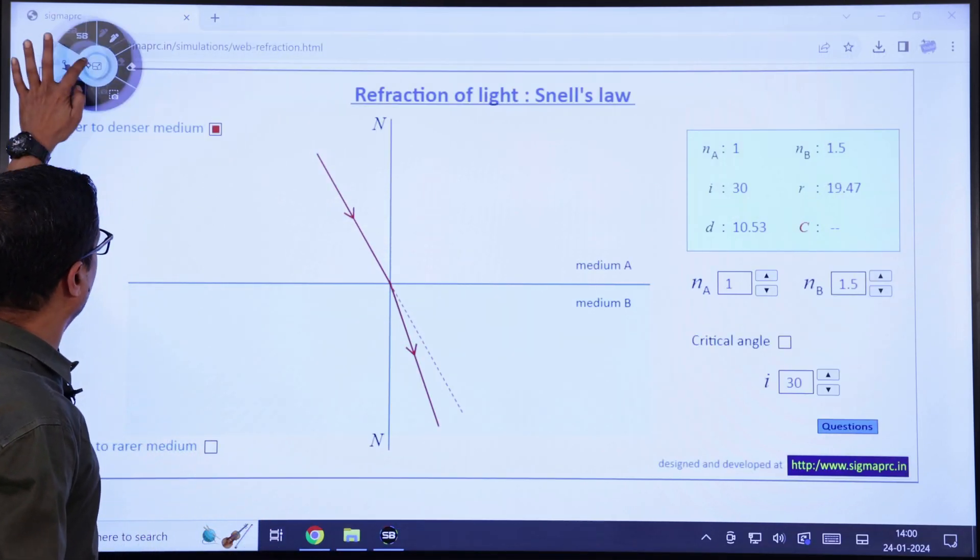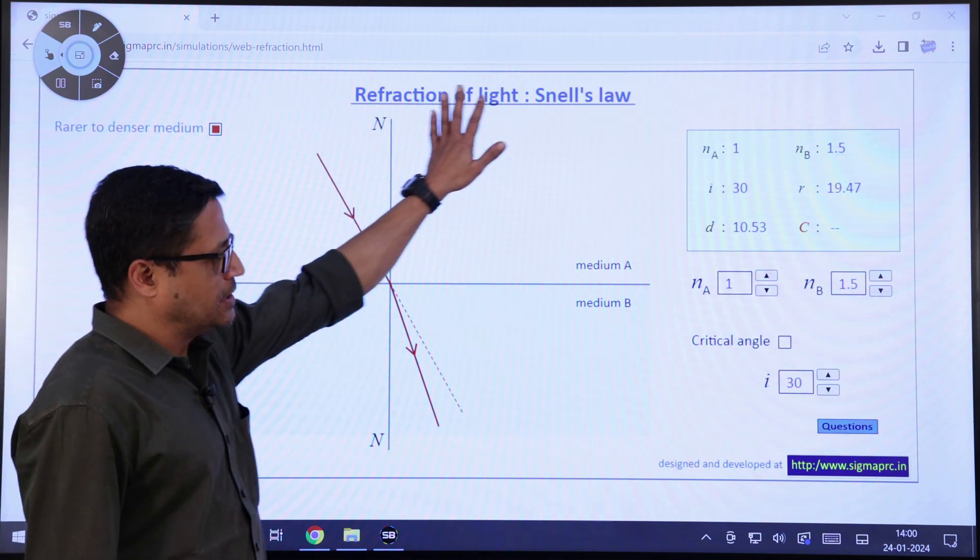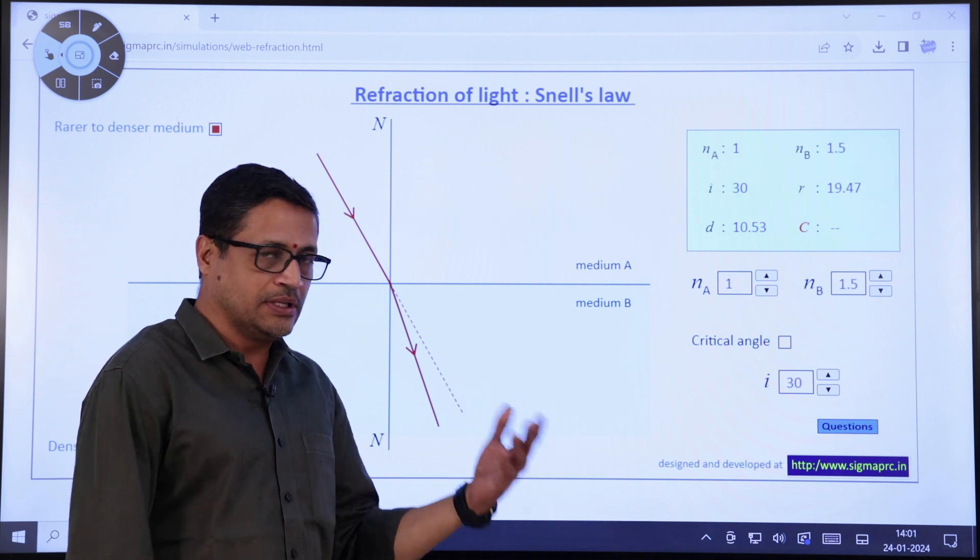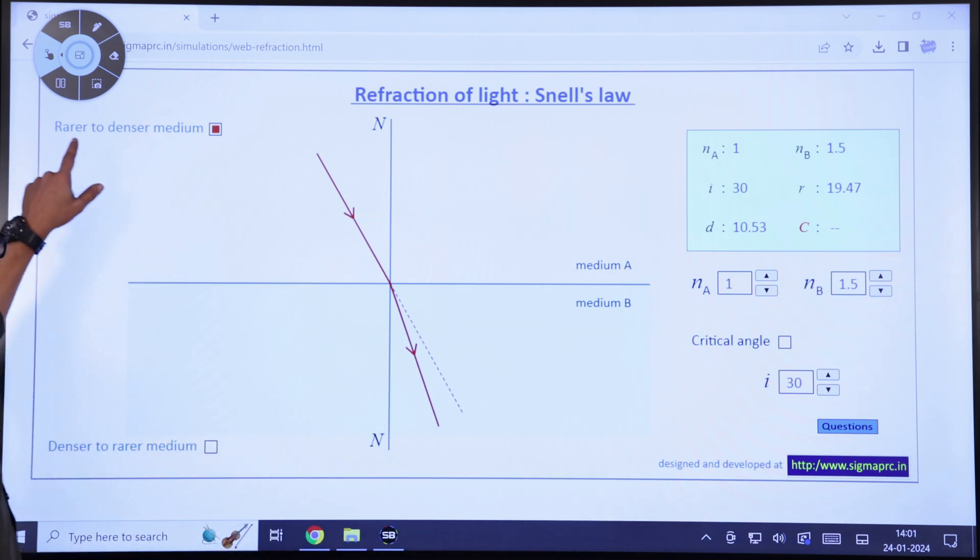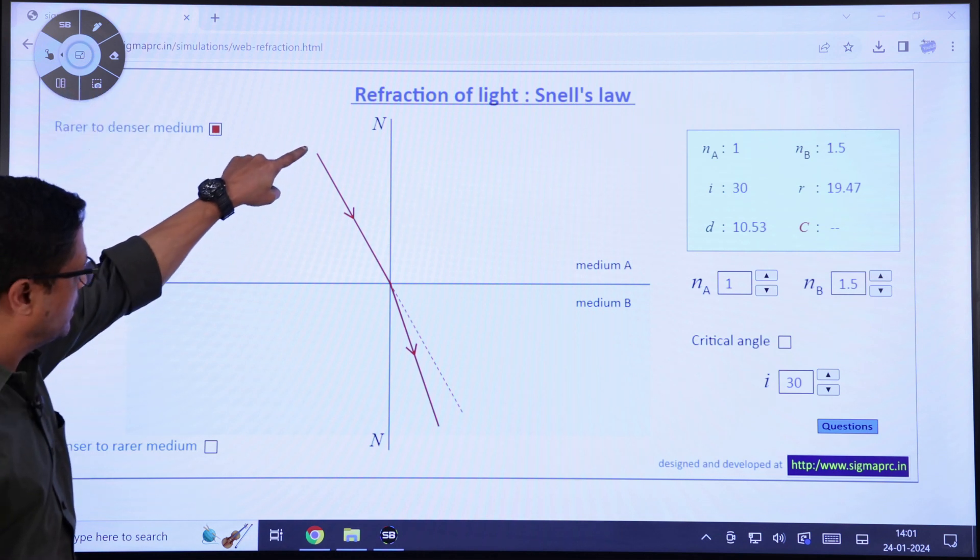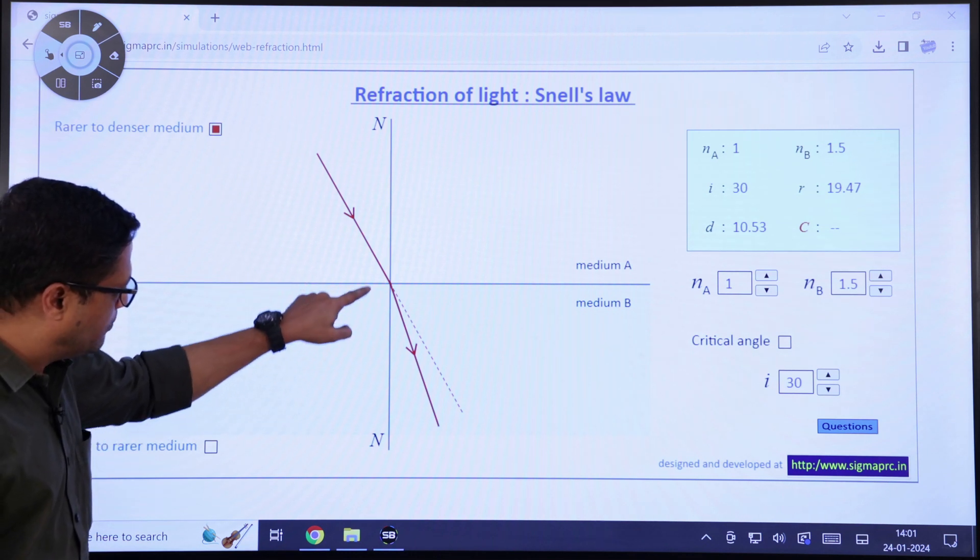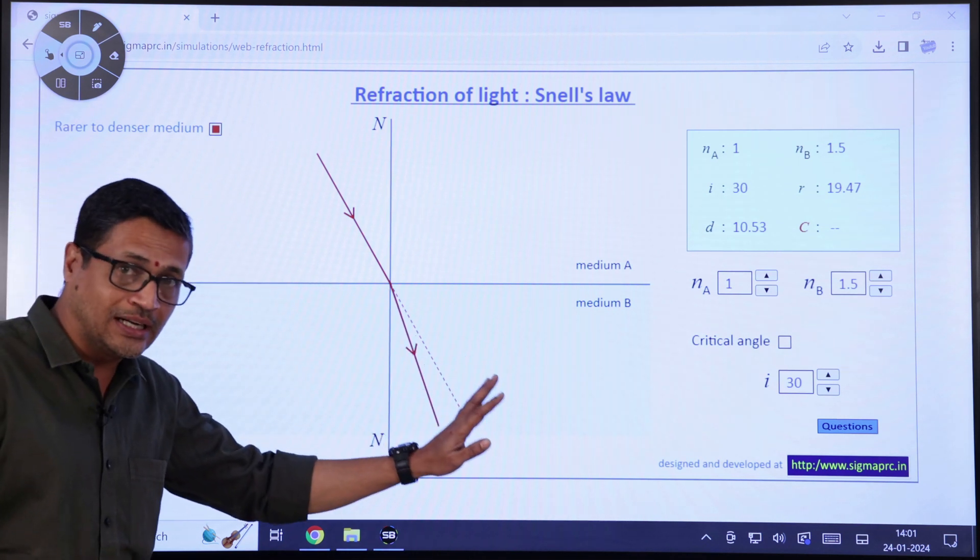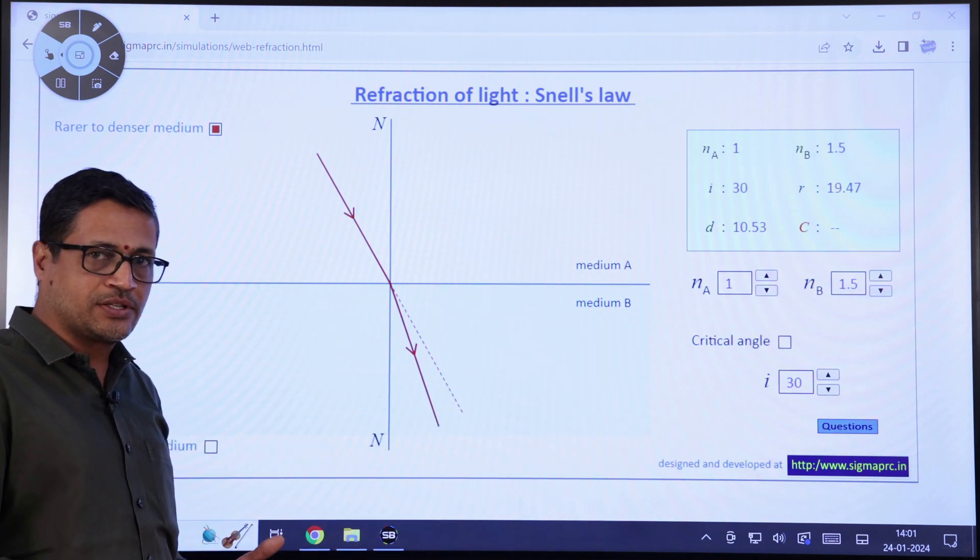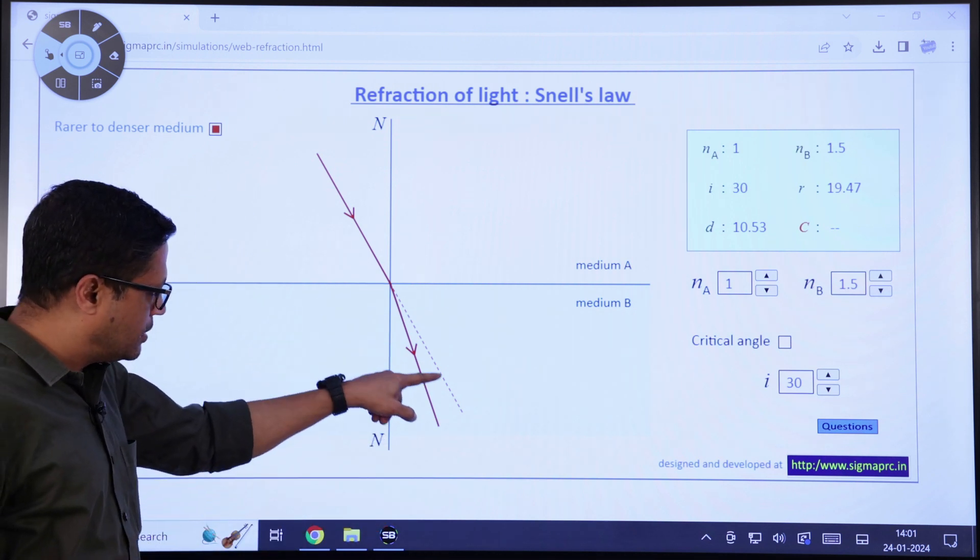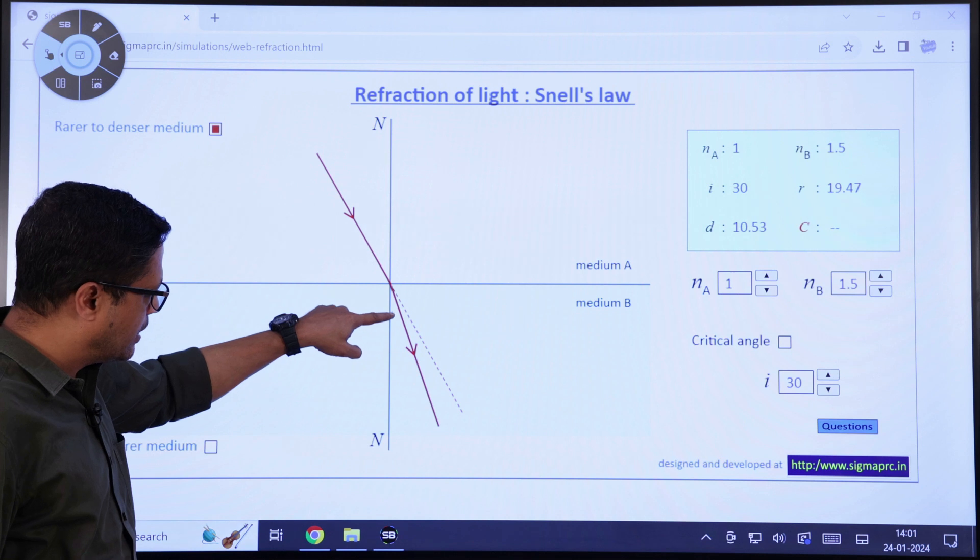Here is a simple simulation about refraction of light and Snell's law, which governs the phenomenon of refraction. This is one medium, this is another medium, and the light is going from rarer to denser medium. The light ray hits the interface here. It should have gone along this dotted line, but in refraction, light deviates from its initial path. Instead of going along the dotted line, the light ray now goes along this path.